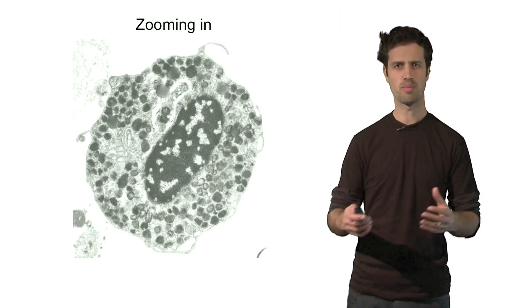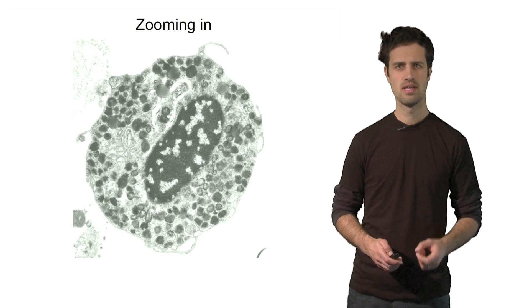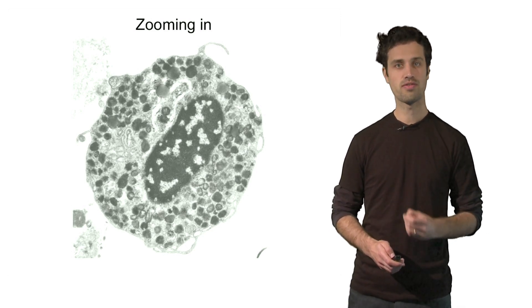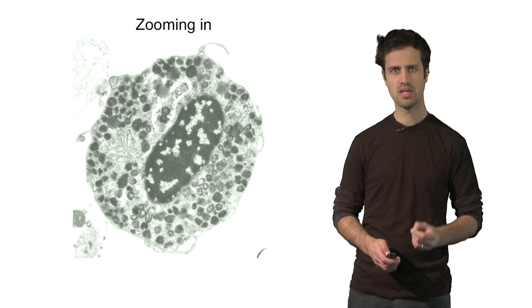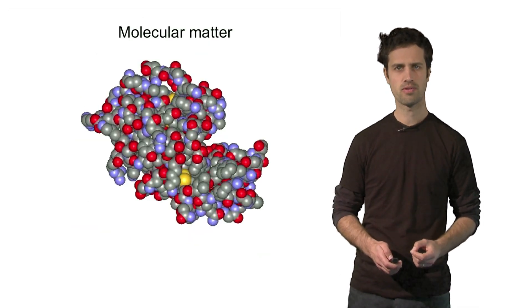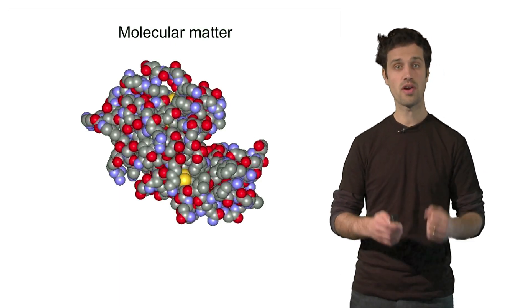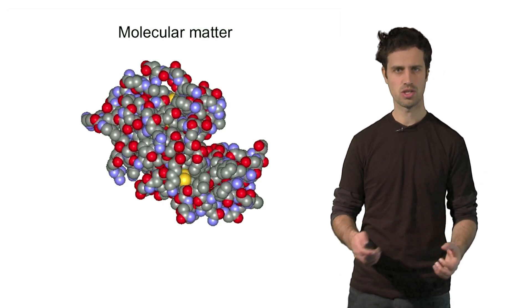And cells are composed of functional units called organelles. For instance, a nucleus or a mitochondria. Well, these units are not the fundamental building blocks yet. In biology, the fundamental building blocks are molecules. For instance, a protein. Proteins are very important molecules in biological materials.